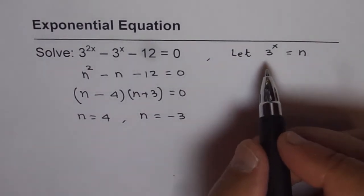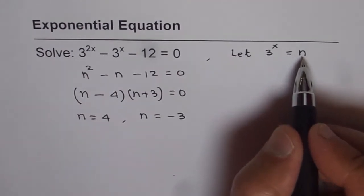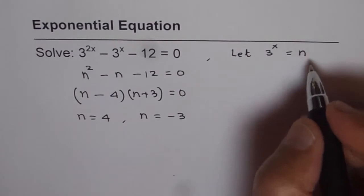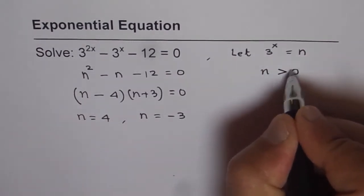We're looking for 3 to the power of x equals n. We know 3 to the power of x is always positive, so n has to be greater than 0.